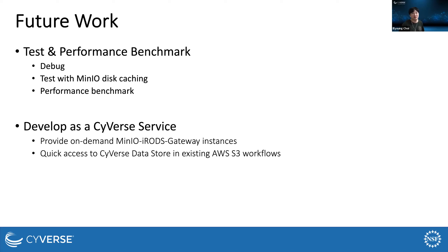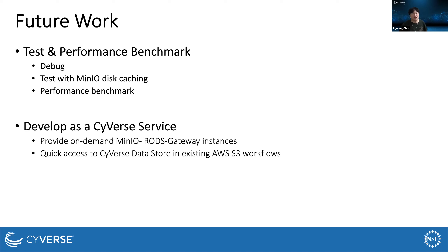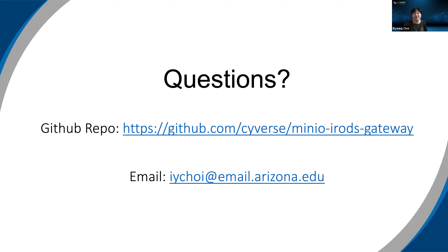For future work, I will test MinIO iRODS Gateway to make it more stable, including the error we just saw. I will also check if MinIO disk caching can improve I/O performance of the gateway, and I'd like to measure some performance benchmarks. Additionally, CyVerse wants to develop a new service that provides on-demand instances of MinIO iRODS Gateway for CyVerse users. This will provide quick and easy access to CyVerse data store in existing AWS S3 workflows. The source code and examples are available in the GitHub repository.